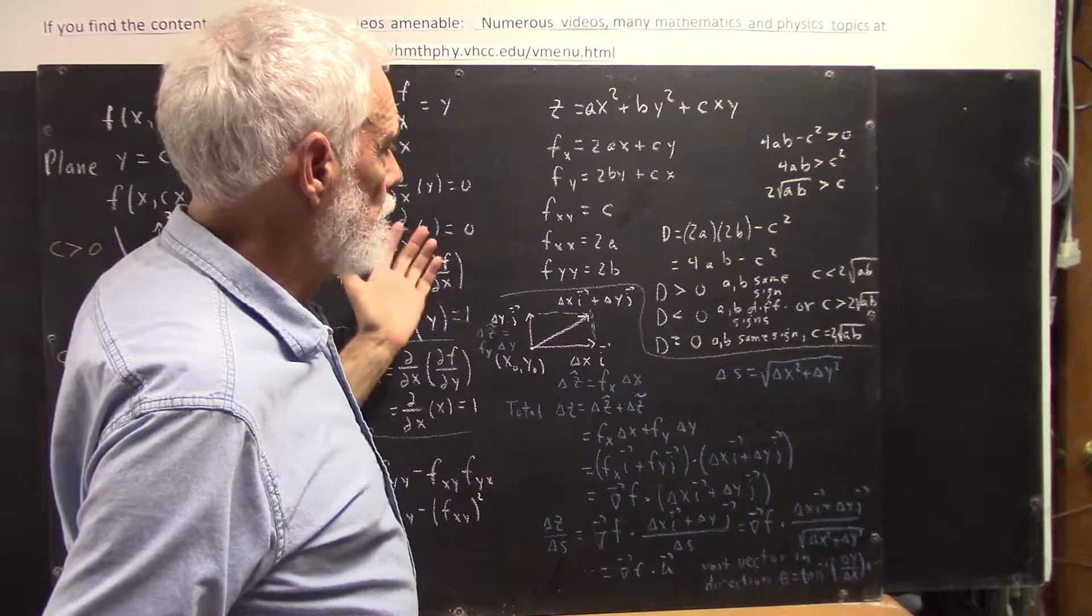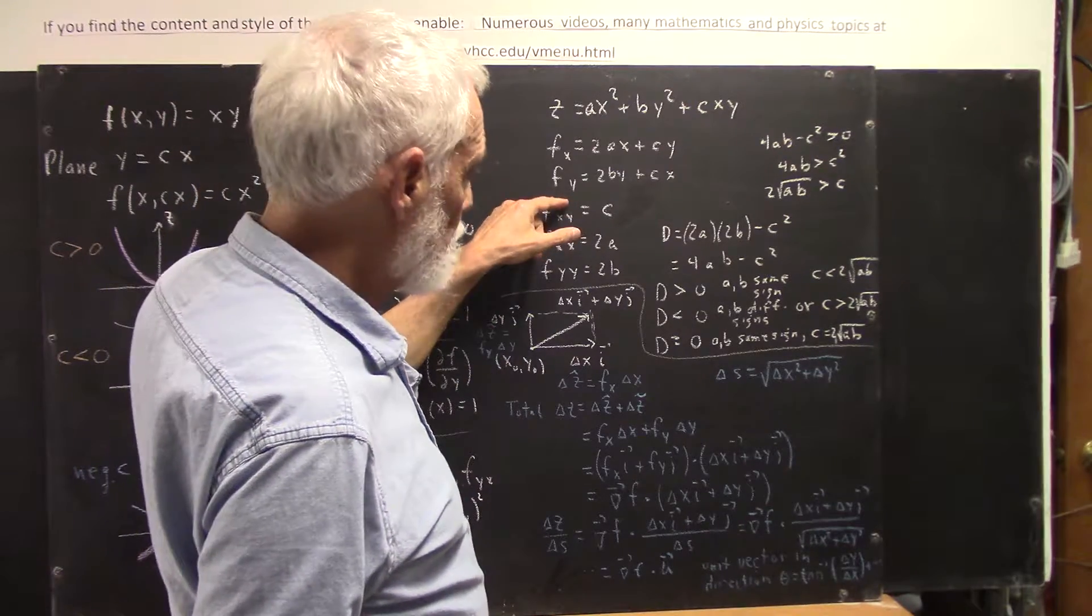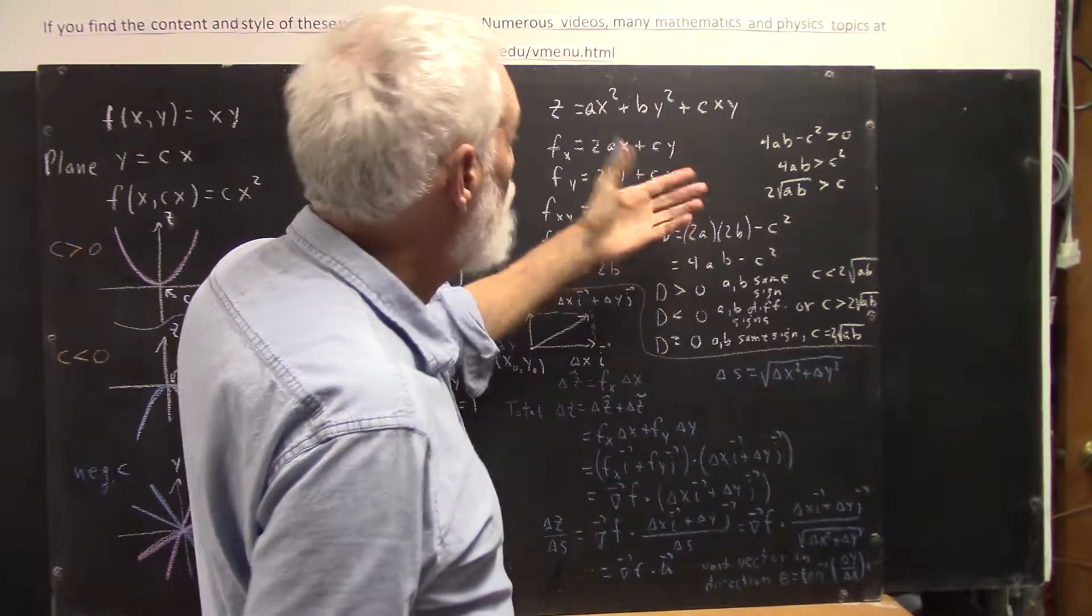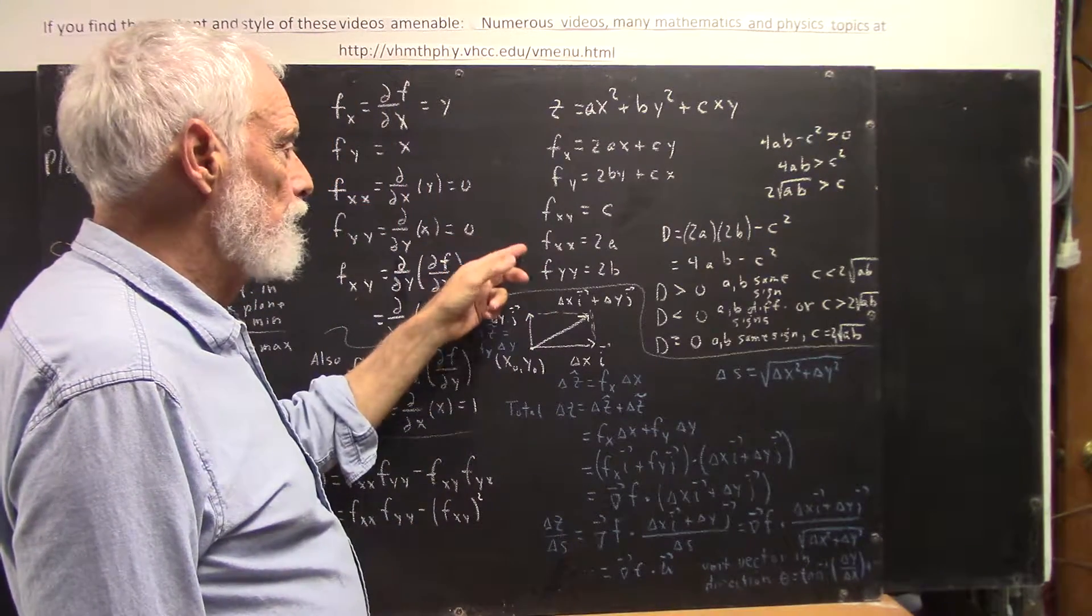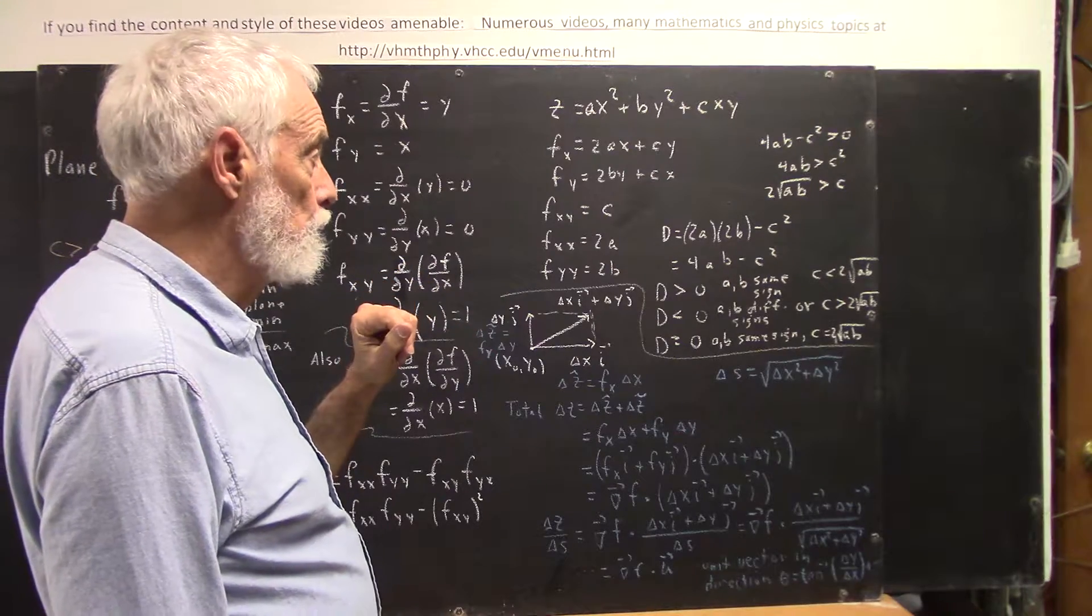And if we took the x-derivative of the y-derivative, we would again get c. So the fxy is c, fxx is 2a, fyy is 2b.